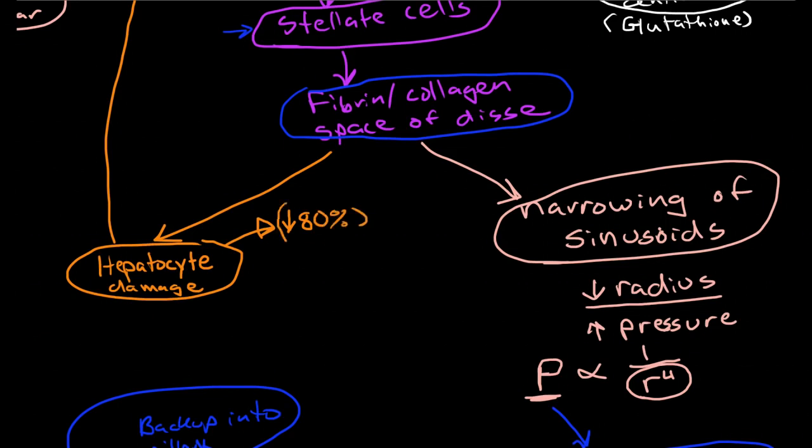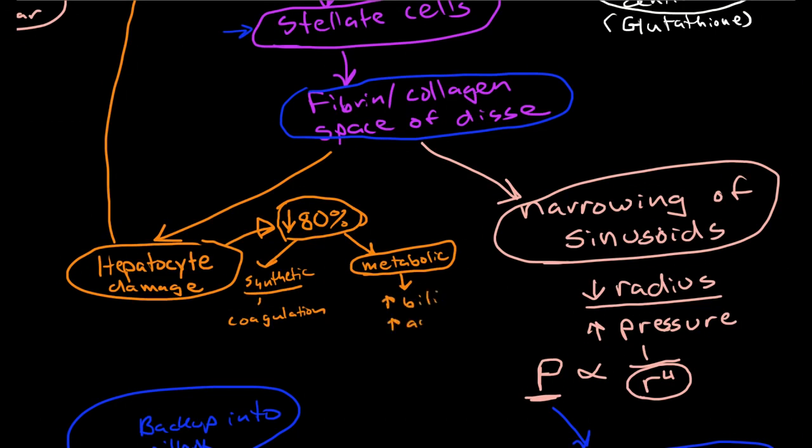And then when that happens, you begin to notice loss of synthetic function with derangements in coagulation. And you notice derangements in metabolic function with hyperbilirubinemia and ammonia, etc.